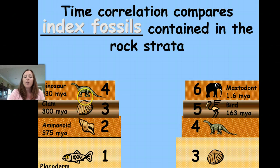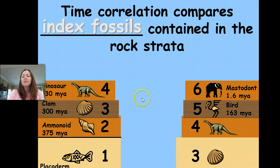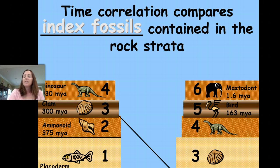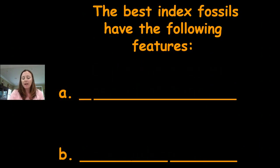Layer four has dinosaur fossils in both columns, so we know those were also deposited at the same time. Looking at the remaining sedimentary layers, we see a bird from 163 million years ago and a mastodon from 1.6 million years ago. These numbers are ordered from oldest to youngest — one being the oldest, six being the youngest — and we match and compare the sides.